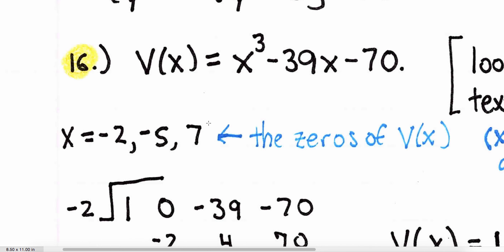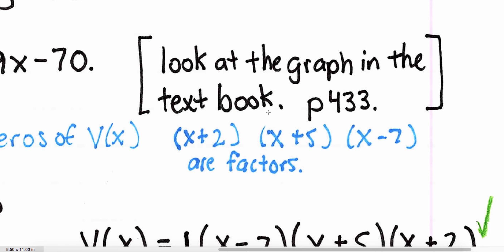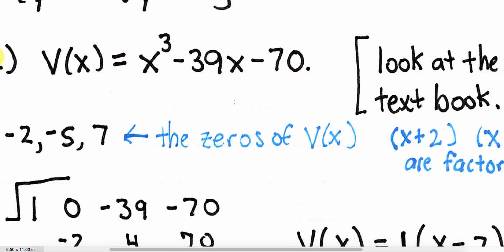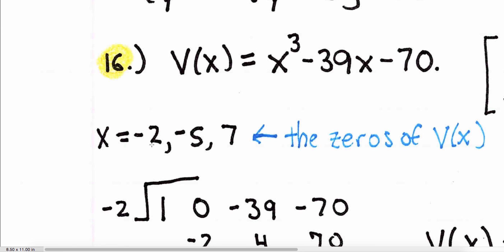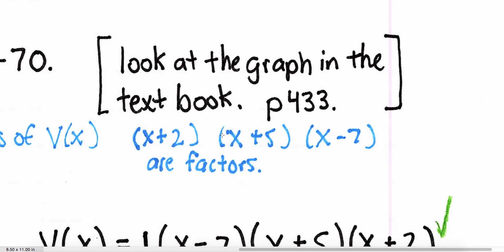Before we do problem sixteen, look at the graph in your textbook on page 433. Make sure you can see where the graph touches the x-axis — those are the zeros, or the roots. We have three roots from this picture: negative 2, negative 5, and 7. Because negative 2, negative 5, and 7 are the roots, that means x plus 2, x plus 5, and x minus 7 are the factors. I'm going to use synthetic division to show that they are indeed the factors.